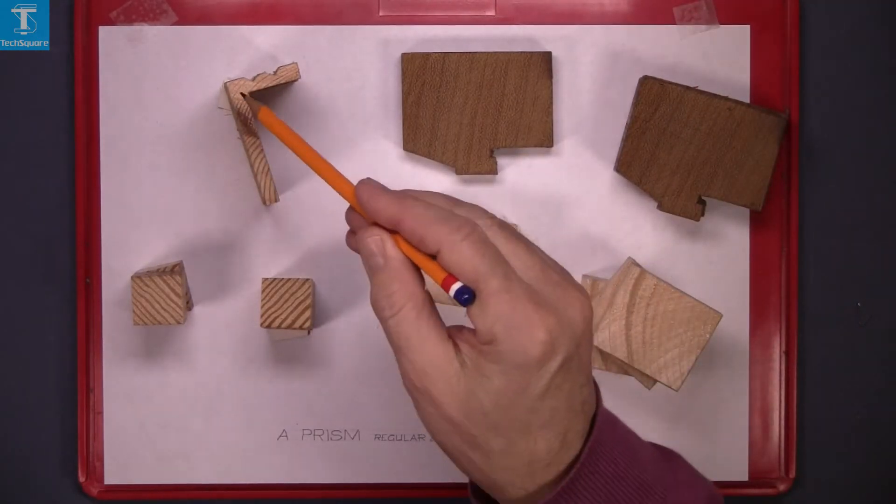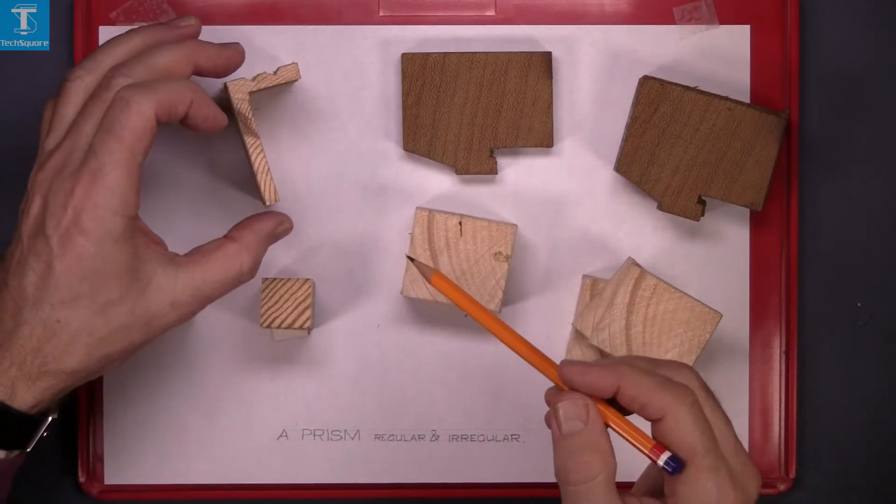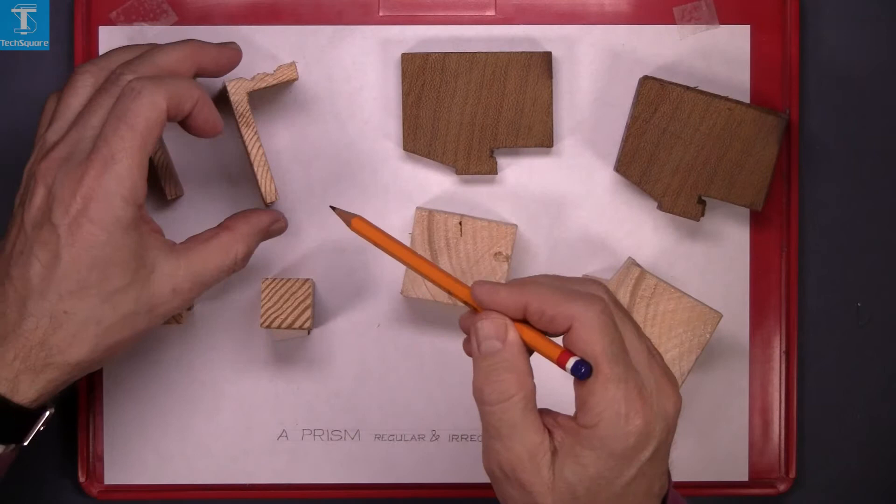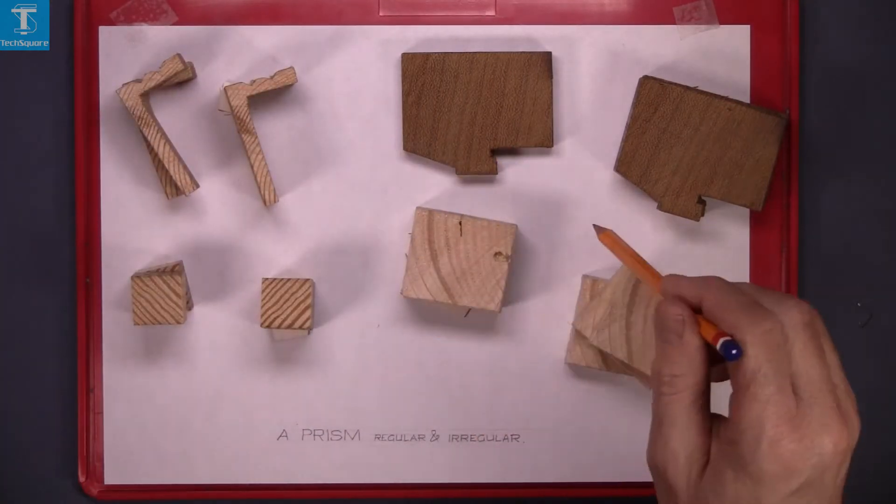And now this is another irregular prism. If I take off a section, you're left with the same shape. So these are all prisms.